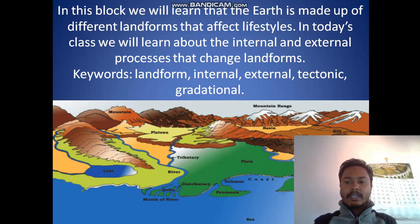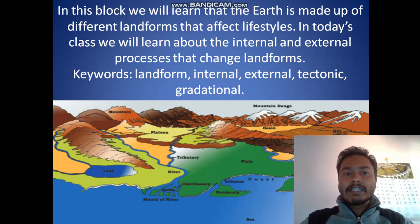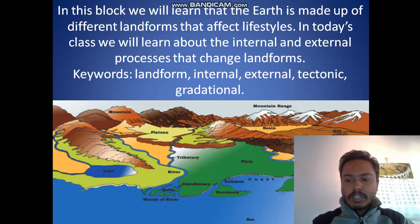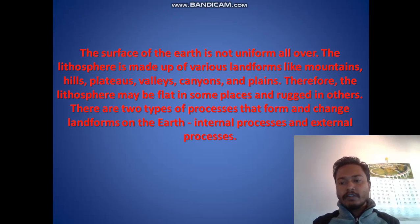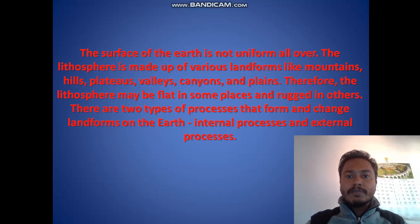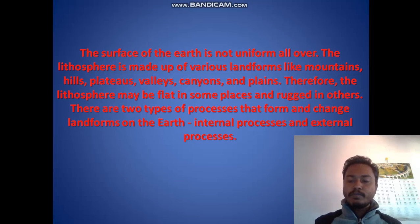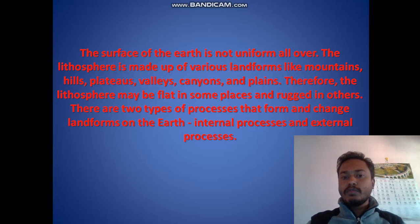As you can see in the picture, you can see a lake, a plain, and so many different mountains — so many different landforms all over. The Earth is not the same everywhere and this affects lifestyles as well. The key words we are going to learn are: landform, internal, external, tectonic, and gradational. The surface of the Earth is not uniform; the lithosphere is made up of various landforms like mountains, hills, plateaus, valleys, canyons, and plains. The lithosphere may be flat in some places and rugged in others.